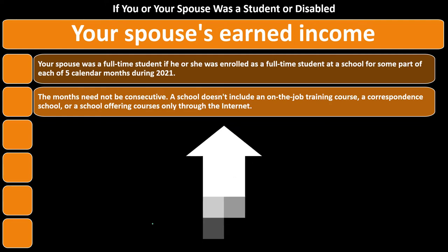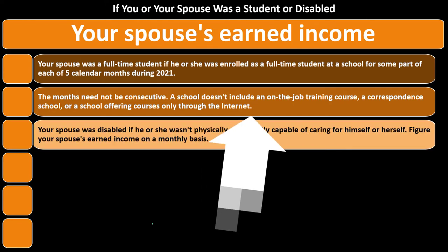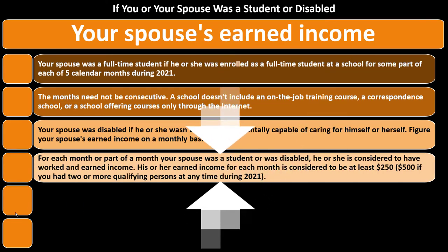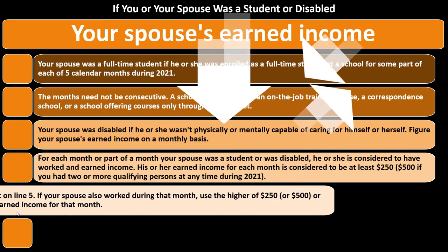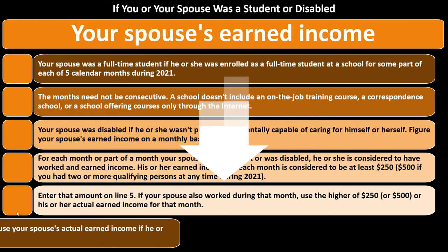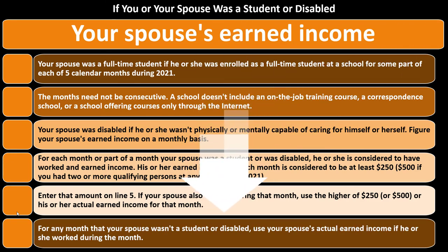School doesn't include on-the-job training, correspondence school, or internet-only courses. If your spouse was disabled — not physically or mentally capable of self-care — figure earned income monthly. For each month your spouse was a student or disabled, he or she is considered to have earned at least $250, or $500 if you had two or more qualifying persons during 2021. If your spouse also worked that month, use the higher of $250/$500 or actual earned income.